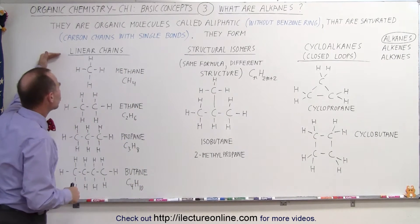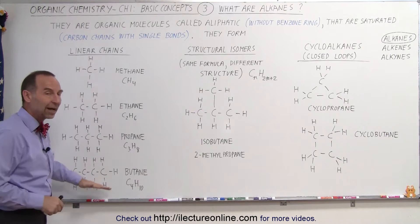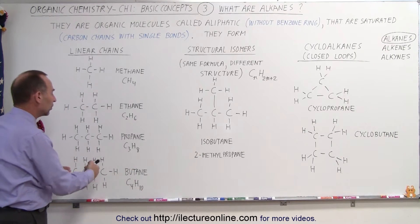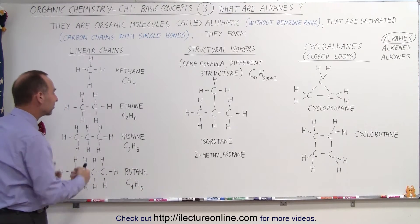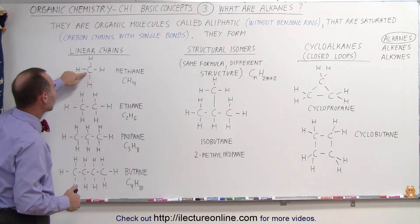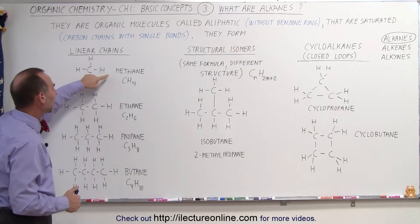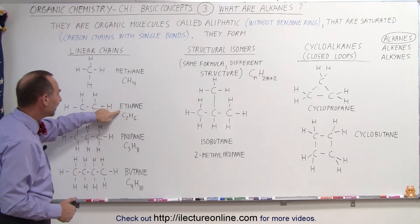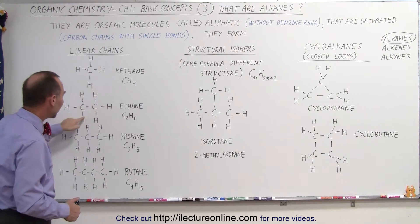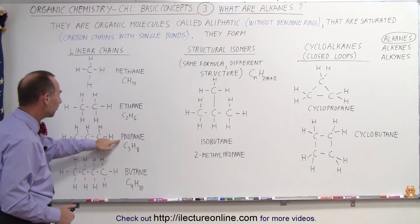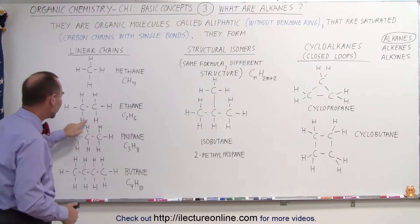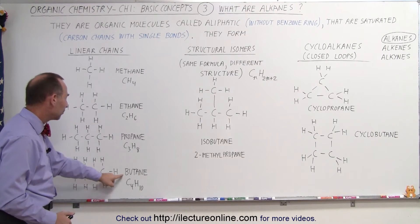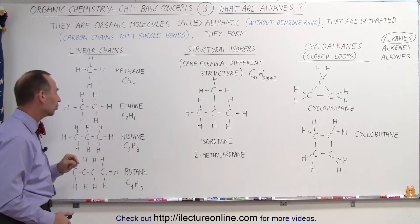Of the linear chains, there are of course many different kinds. Each time we simply add one additional carbon to form the next type of chain. Starting with a single carbon, we have methane with four hydrogens. Two carbons, we have ethane with six hydrogens. Three carbons, we have propane with eight hydrogens. And four carbons, we have butane with ten hydrogens.